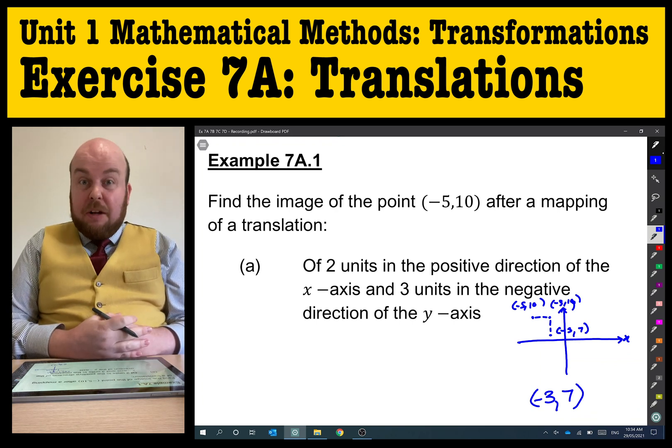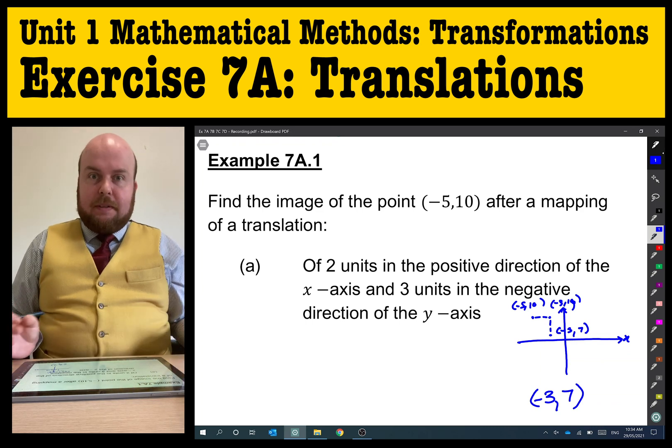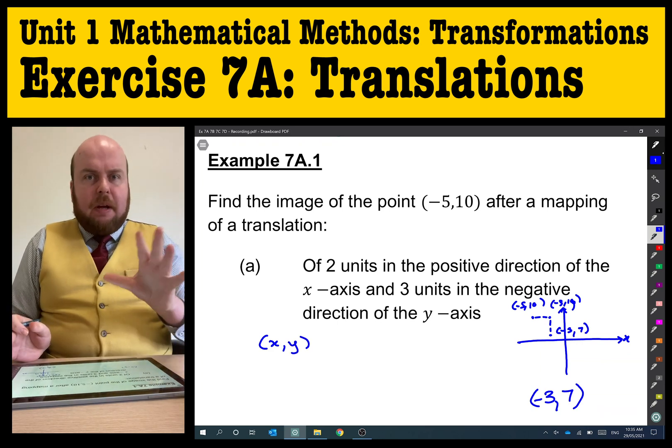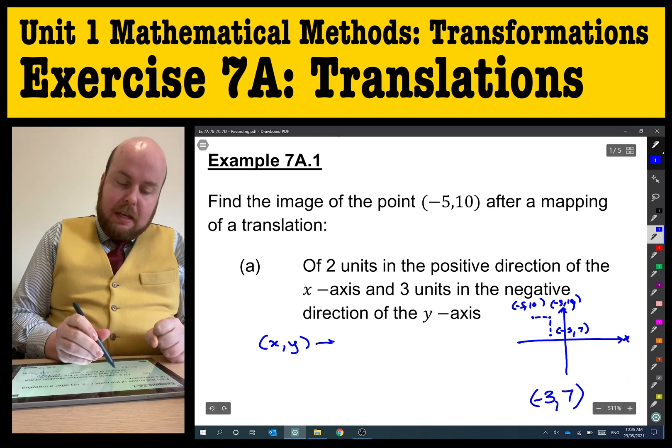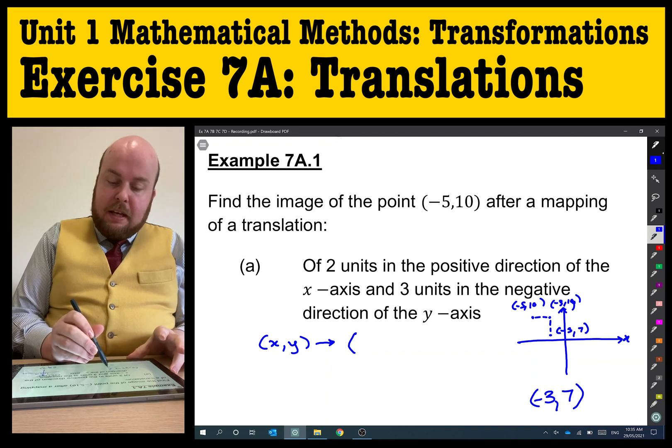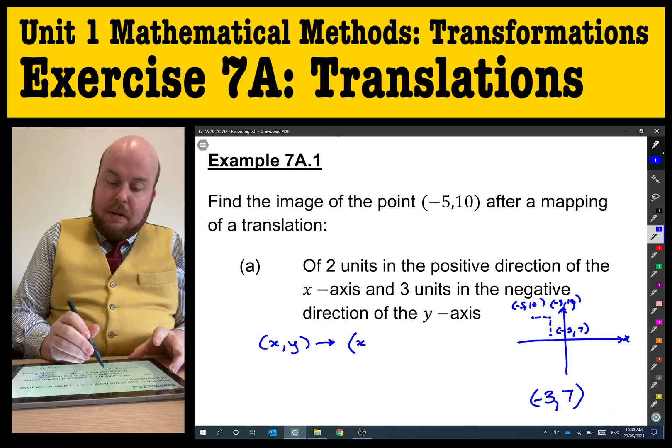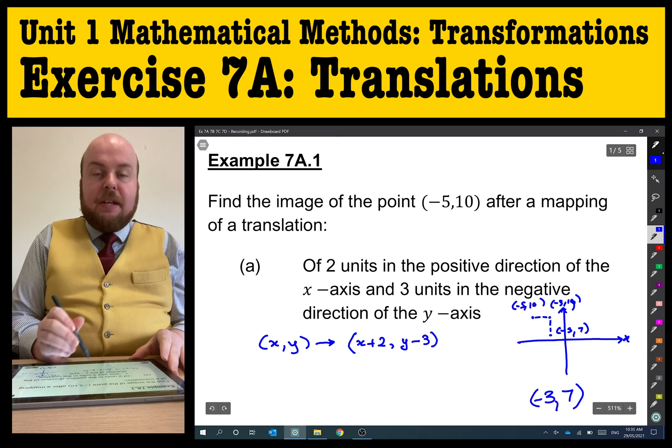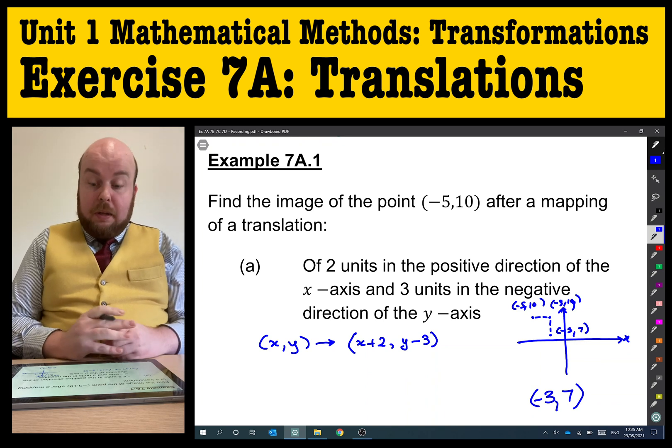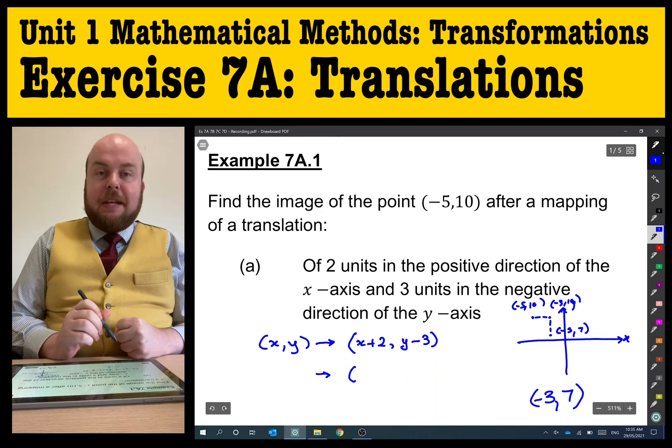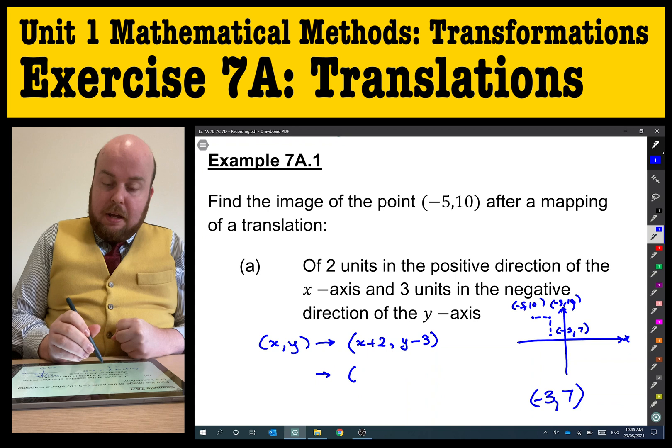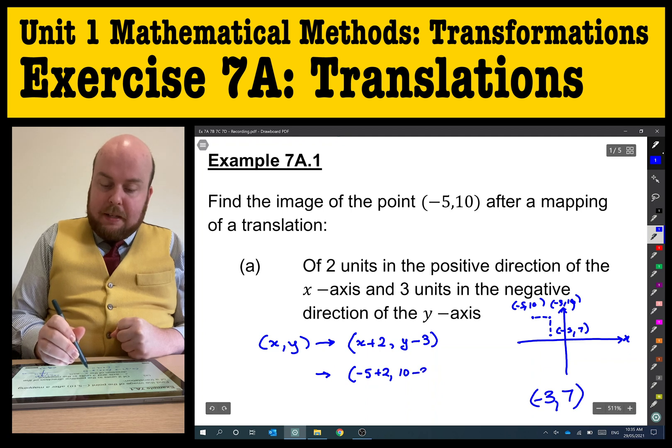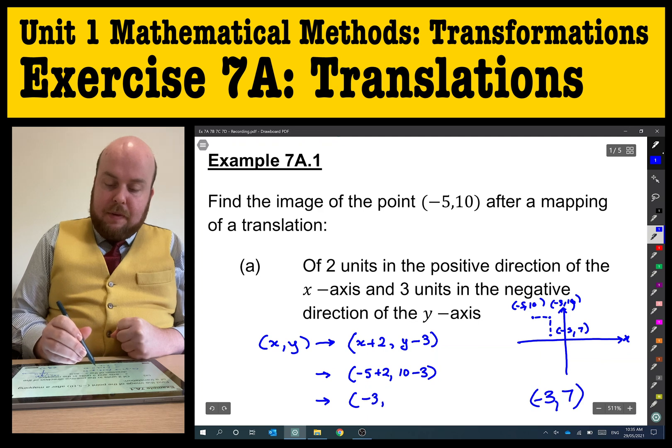We can also show this using some algebra and a little system of numbers and coordinates. We start by saying that the coordinates of x, y—this could also be used for functions and things like that. What we've got is the x-values are being moved two units in the positive x direction. We're also seeing that in the y-axis, we're going three units in the negative direction. Therefore, all I would need to do is substitute those x's and y's for the coordinate. We can put in, the original one was -5 plus 2, and we've got 10 minus 3. And so that becomes (-3,7).